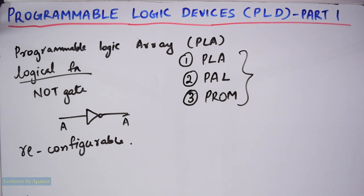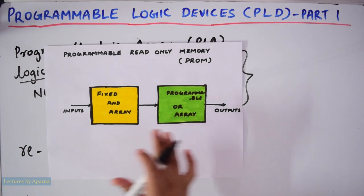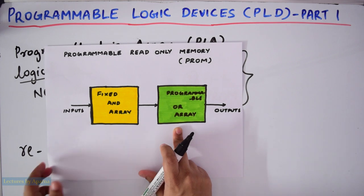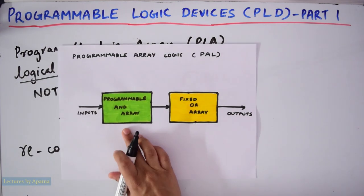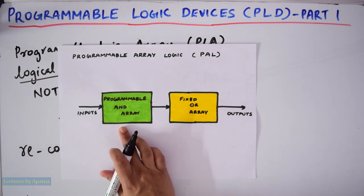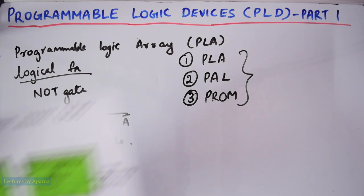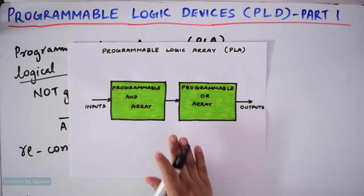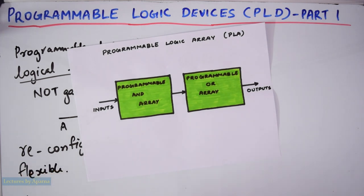For PROM or Programmable Read Only Memory, the AND array is Fixed and OR array is Programmable — that is, you can program only the OR array. For PAL, the AND array is programmable and the OR array is Fixed — you can program only the AND array. For PLA or Programmable Logic Array, both the AND array and OR array can be programmed. So PLA is the most flexible type of programmable logic device.